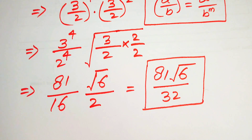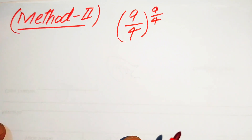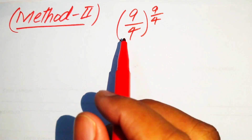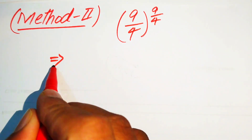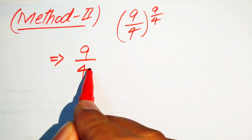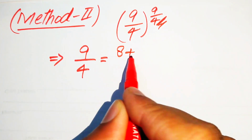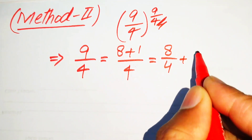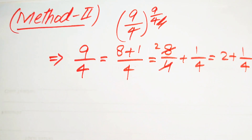This is the simplified form from the first method. Now we move to the second method. We copy down the expression with base 9/4 and exponent 9/4. This time we work on the exponent: we write 9/4 as (8+1)/4 = 8/4 + 1/4 = 2 + 1/4.